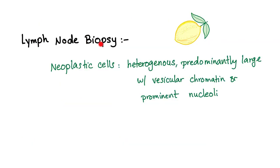On lymph node biopsy—which is always excisional, never fine needle aspiration—you will find neoplastic cells. Because the name is diffuse large B-cell lymphoma, the cells are heterogeneous, predominantly large, with vesicular chromatin and prominent nucleoli. A prominent nucleolus is one of the criteria of malignancy.